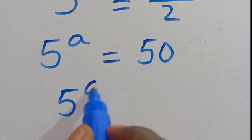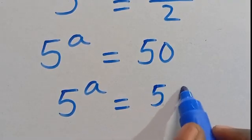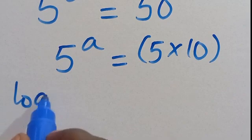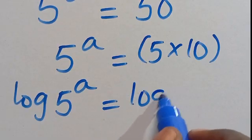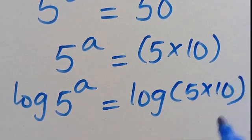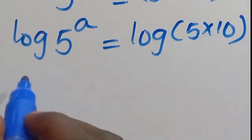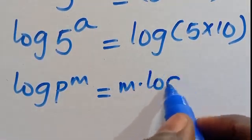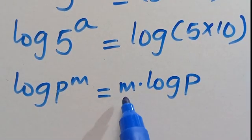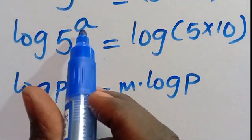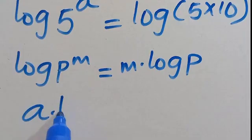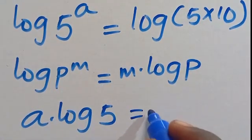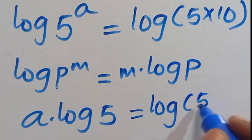From here, 5 to the power of A equals 50 can be simplified as 5 times 10, put them in parentheses. Then let's introduce log to both sides, so we have log of 5 to the power of A equals log of 5 times 10. Recall that log P to the power of M equals M multiplied by log P — the exponent comes down. Applying it here, we have A multiplied by log 5 equals log of 5 times 10.